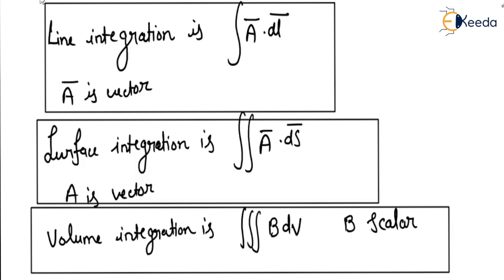Now after knowing the dL vector, ds vector, and dV, we can define the integrations. Line integration is the integral of vector A dot dL, where A is a vector quantity. Surface integration is the integral of vector A dot ds, where A is a vector quantity. Volume integration is the triple integral of scalar B dV, where B is a scalar quantity. Thank you students.